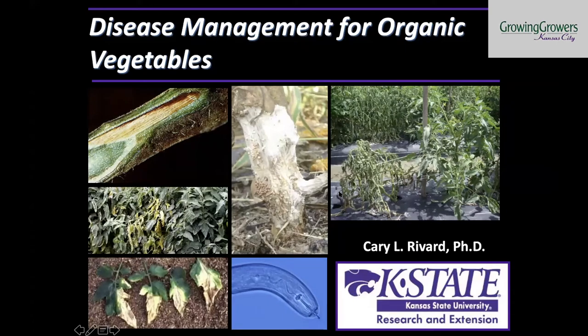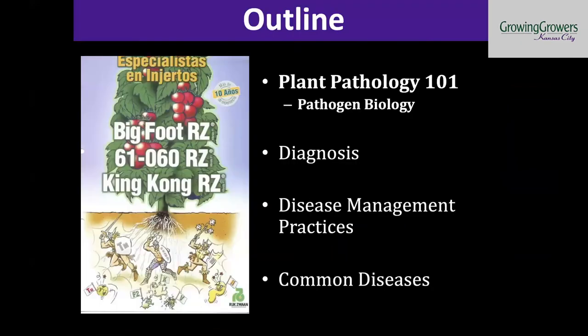In terms of what we're going to talk about today, I thought it would be good to go through a little bit of basic biology about plant pathogens — fungi, bacteria, viruses — what they are and how they work. Then also some information about diagnosis: how we identify problems in the field as being caused by biotic stressors like pathogens, or abiotic stressors like heat stress or nutrient stress. Then we'll get into some management practices we can use in organic cropping systems for specialty crops.